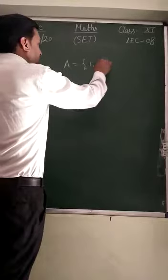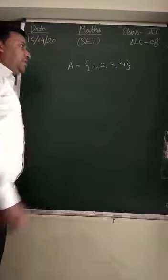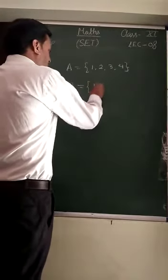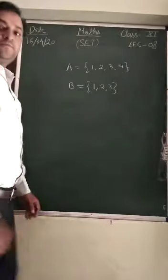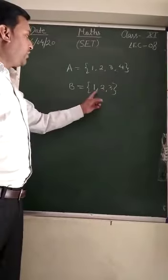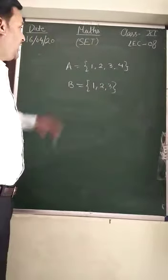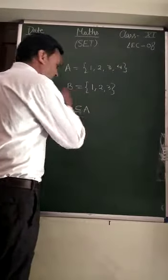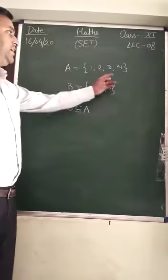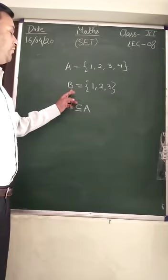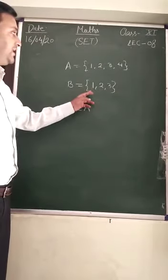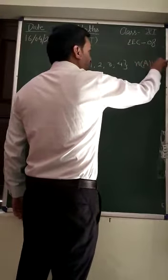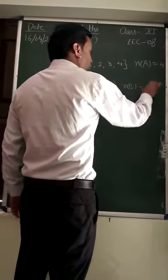Suppose there is a set A that contains the elements 1, 2, 3, 4. And if we write another set B containing elements 1, 2, 3. Now the set B contains the elements 1, 2, 3. You can easily see that according to the definition we learned yesterday, B is a subset of A, because all the elements in B are also present in A. The number of elements in set A equals 4, and the number of elements in set B equals 3.